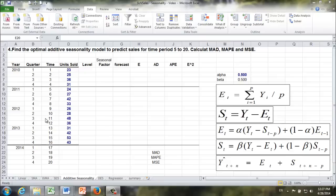Question 4. Find the optimal additive seasonality model to predict sales for time period 5 to 20 and calculate MAD, MAPE, and MSE.